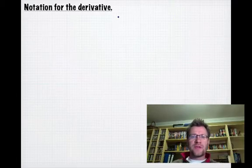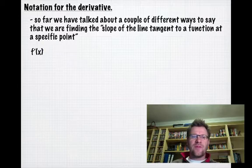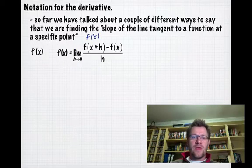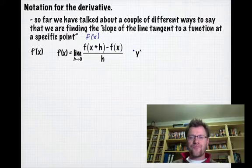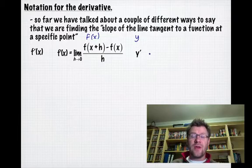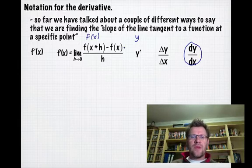First, we'll look at notation for the derivative. So far we've talked about different ways to say we're finding the slope of the line tangent to a function at a specific point. If our original function was f(x), then taking the derivative is f'(x). Another way is using the definition with limits: f'(x) = lim(h→0) [f(x+h) - f(x)]/h. We could call it y' if our original function was y, or Δy/Δx, which leads us to dy/dx, a very common notation we'll see often.